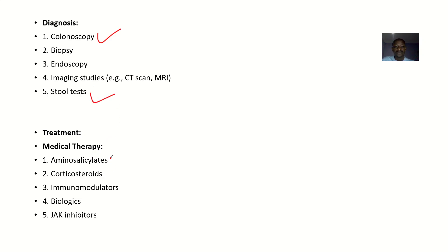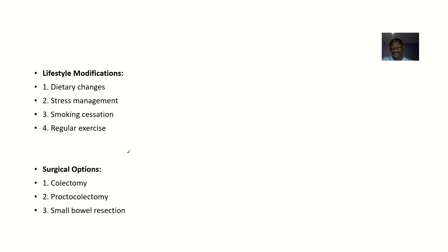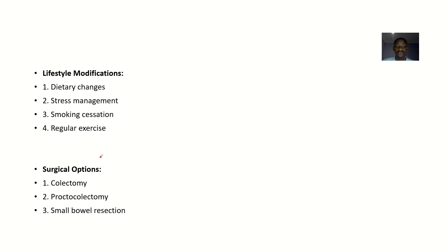For medical therapy, you could use drugs like aminosalicylates, corticosteroids, immune modulators, and biologics. For lifestyle modification, the patient might have to change their diet to one that will make their stool very soft — for example, taking a lot of roughage. There's also stress management, smoking cessation, and regular exercise. Surgeries could include colectomy, proctocolectomy, and small bowel resection.